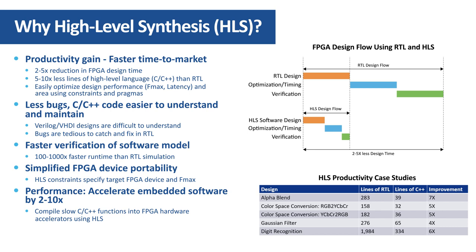Writing C++ software code is more concise, with 5 to 10 times fewer lines than with RTL. Software is easier to understand and modify for future improvements or maintenance when compared to RTL. Software conciseness and readability also means fewer bugs in your FPGA design. With these advantages, engineers will see a 2 to 5 times reduction in overall FPGA development time with HLS.